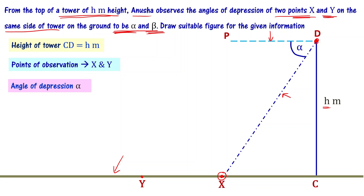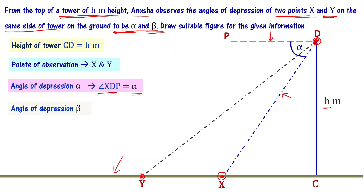Note that angle XDP is alpha degrees. To represent the angle of depression beta, we have to connect Y and D. The line of sight is the horizontal level. The angle is beta, that is the angle of depression. Angle YDP is beta, and angle C is 90 degrees.